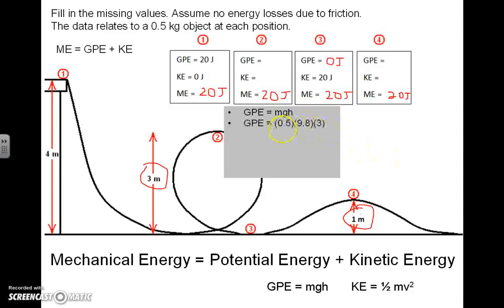We've got 0.5, which is the mass given to you in the problem up here. You have 9.8, that's the known value for gravity on Earth. And you have three, which is the three meters that we just grabbed from the diagram. So let's solve that. That's 14.7 joules of gravitational potential, which means we could go up here and put 14.7 joules.